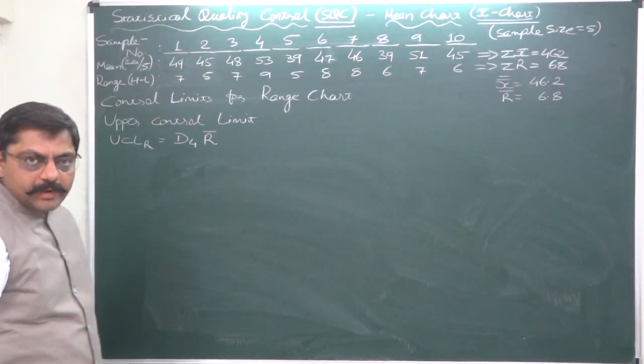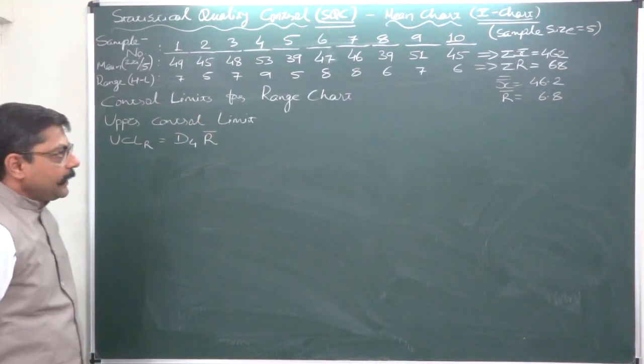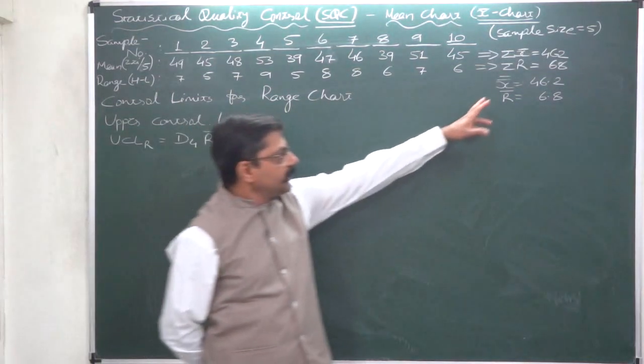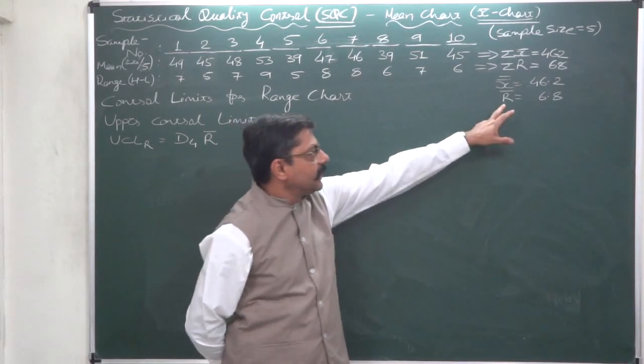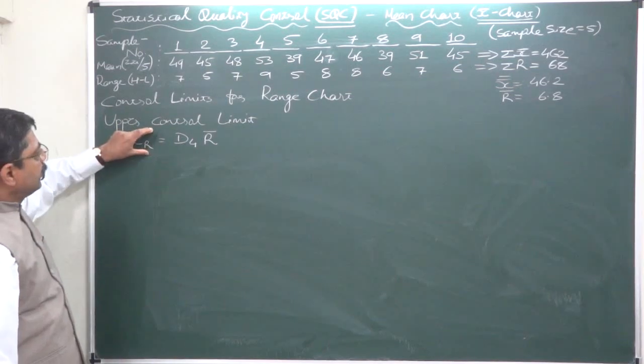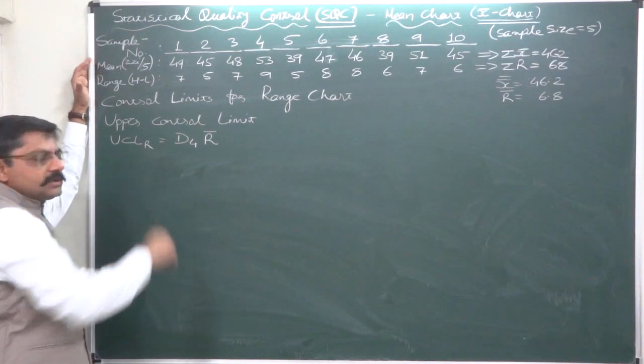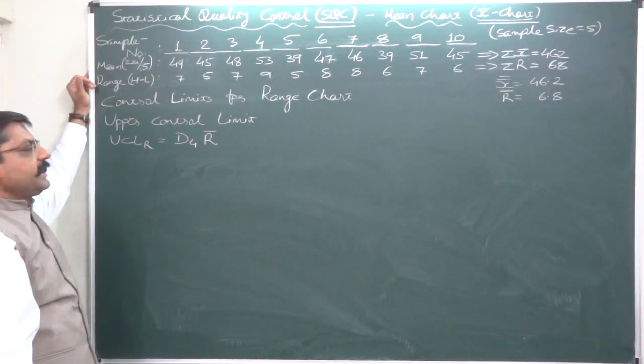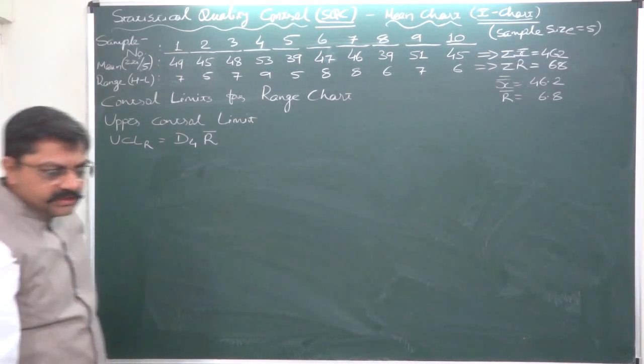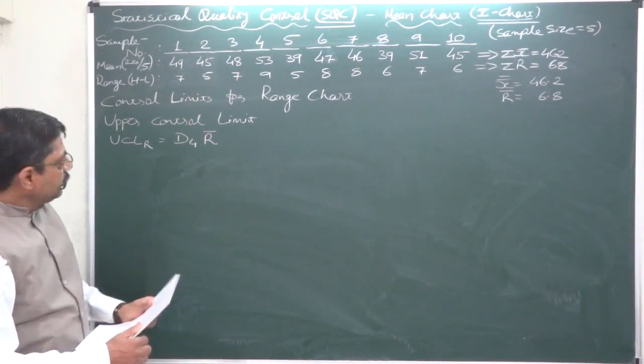We have sample ranges for all 10 samples. First step is to calculate R bar and to calculate upper control limit (UCL). The R subscript shows that UCL upper control limit is for range chart. The formula is very simple: D4 times R bar. But what is D4? Either the examiner should give the value of D4 and D3 for UCL and LCL respectively, or you should have the required table.